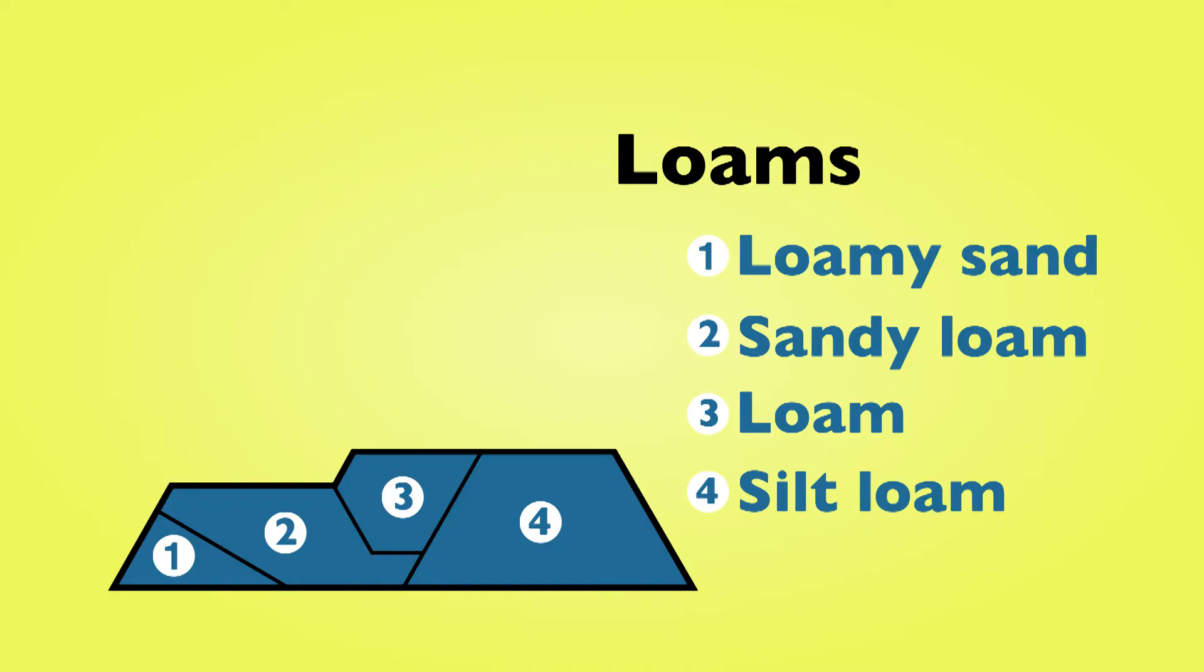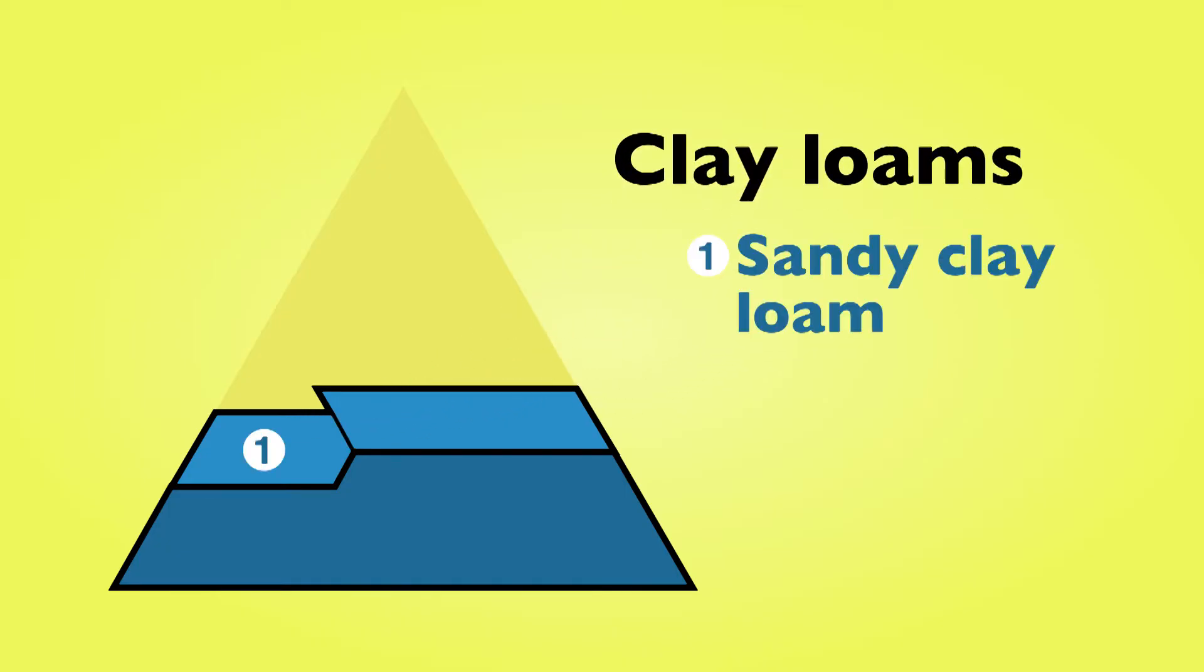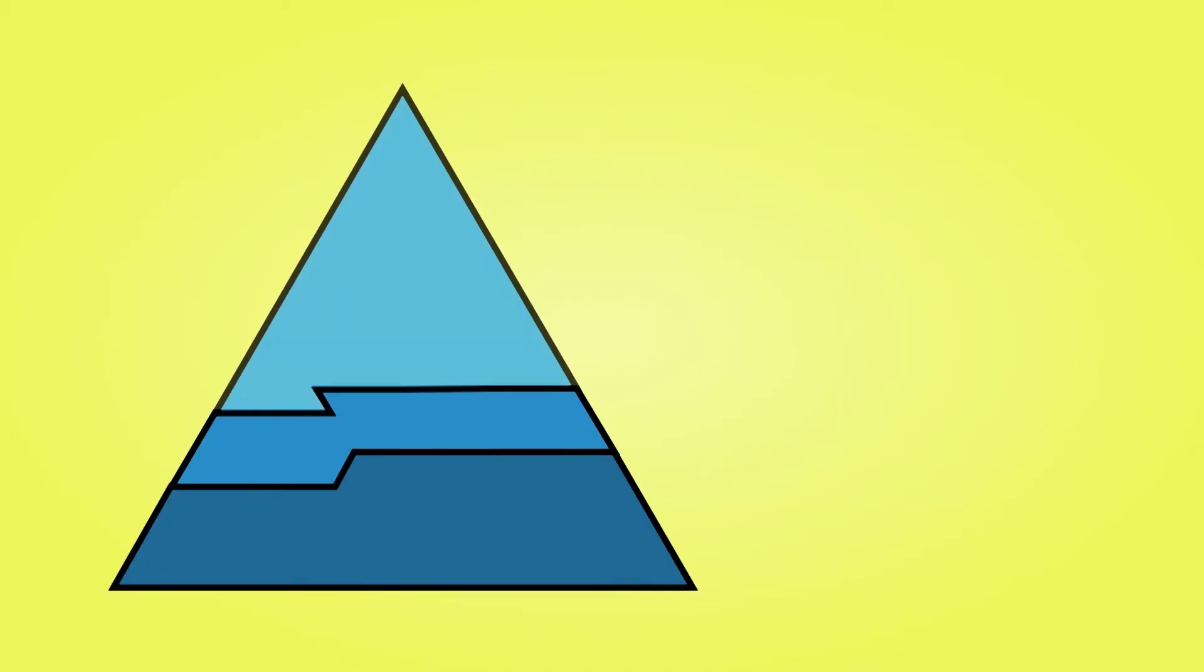From 26% to 40% clay, those are considered the clay loams: sandy clay loam, clay loam, and silty clay loam. Anything above 40% clay, those are considered clays. So sandy clay and silty clay.